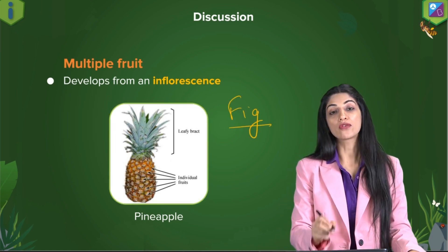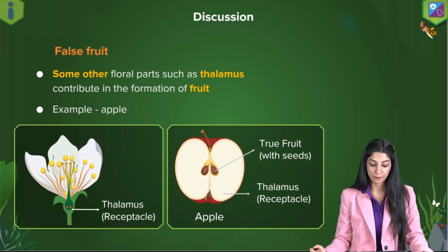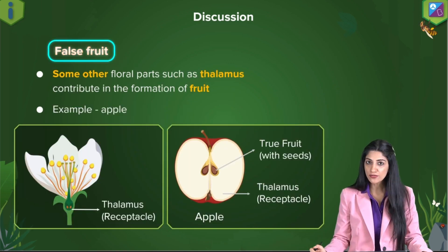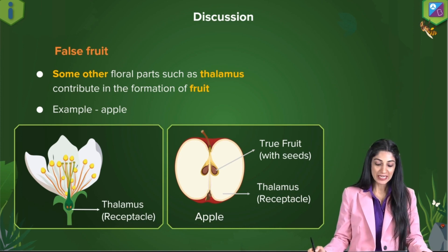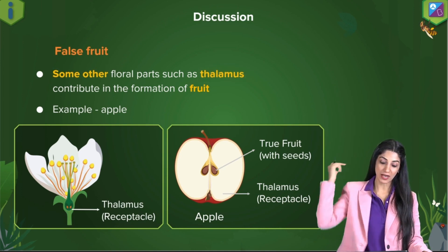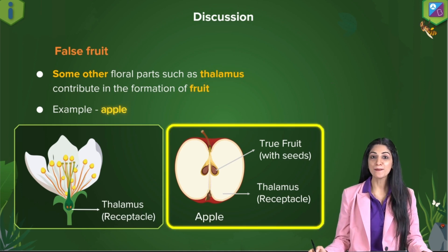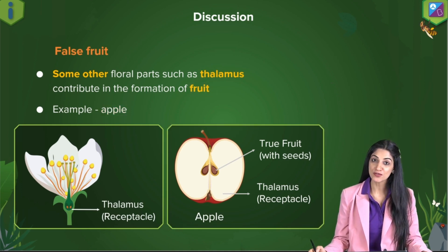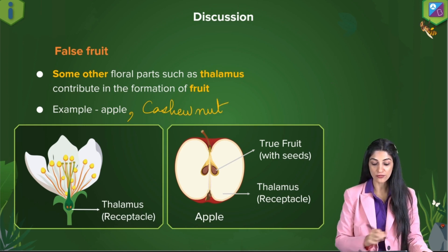Now, what is a false fruit? A false fruit is one where the ovary is not developing into the fruit; instead, other parts such as the thalamus become the fruit. The classic example is apple — apple is a false fruit — and so is cashew nut.